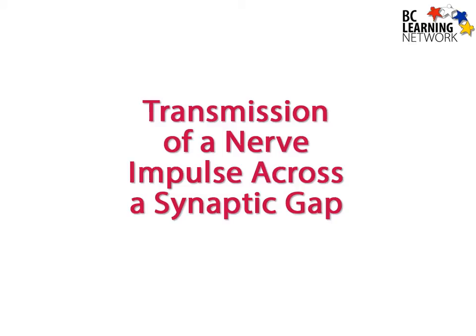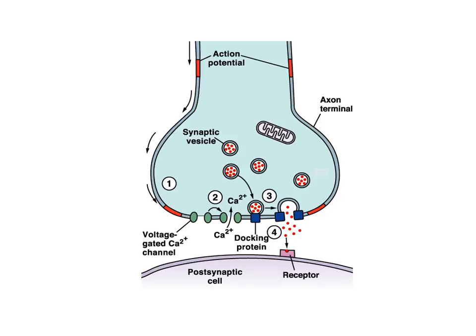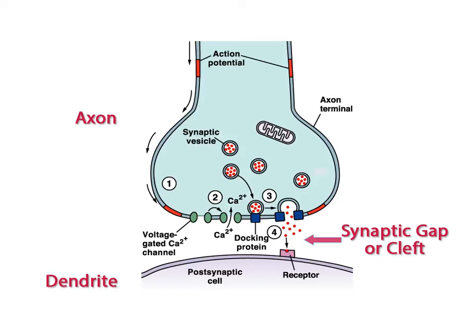In this video we will discuss nerve impulse transmission across the synaptic gap. Like the gaps between the Schwann cells on an insulated axon, a gap called a synapse or synaptic cleft separates the axon of one neuron and the dendrites of the next neuron. Neurons don't touch. The signal must traverse the synapse to continue on its path through the nervous system.